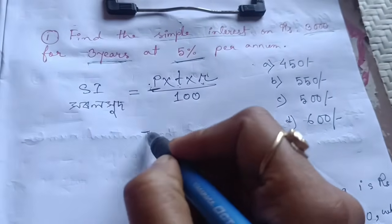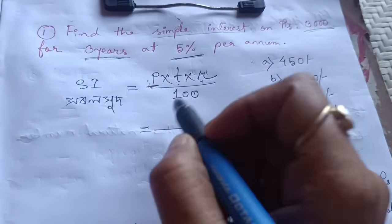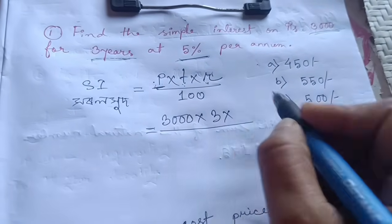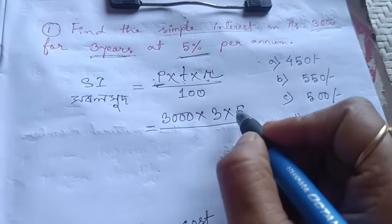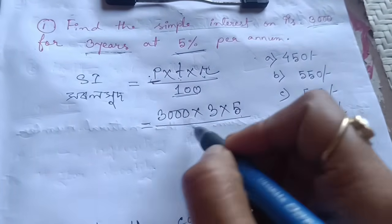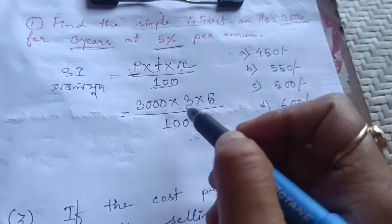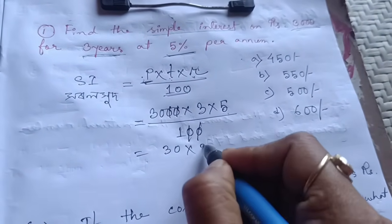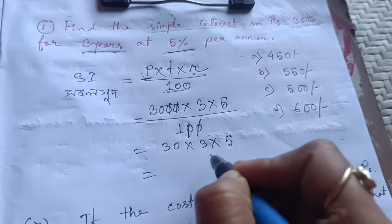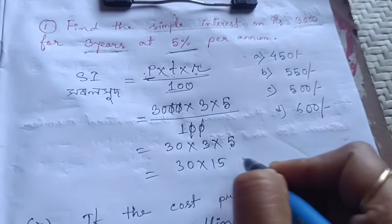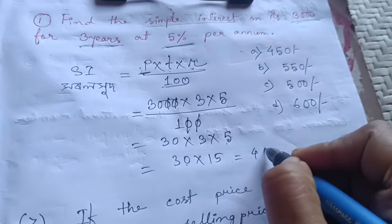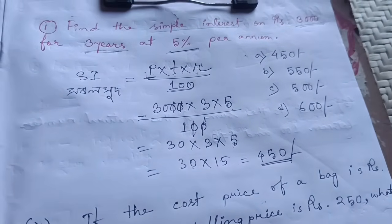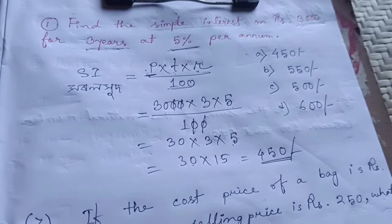P means 3000. You can see the formula. You can write: 3000 into 3 into 5 divided by 100. You can write the answer as 450.